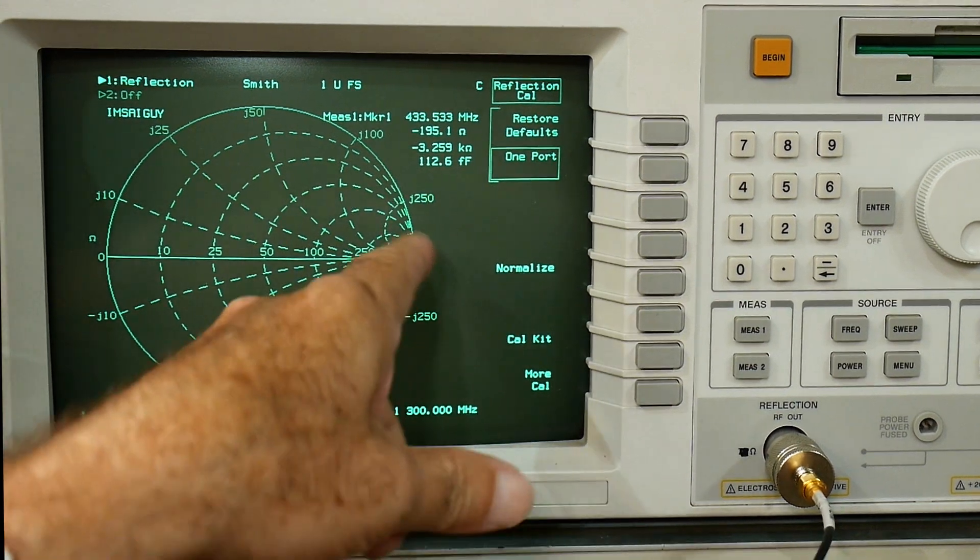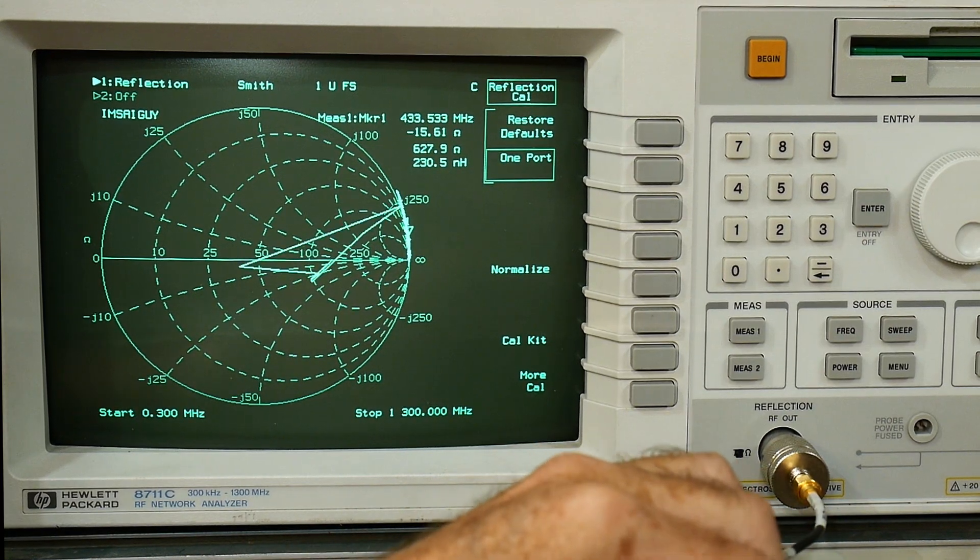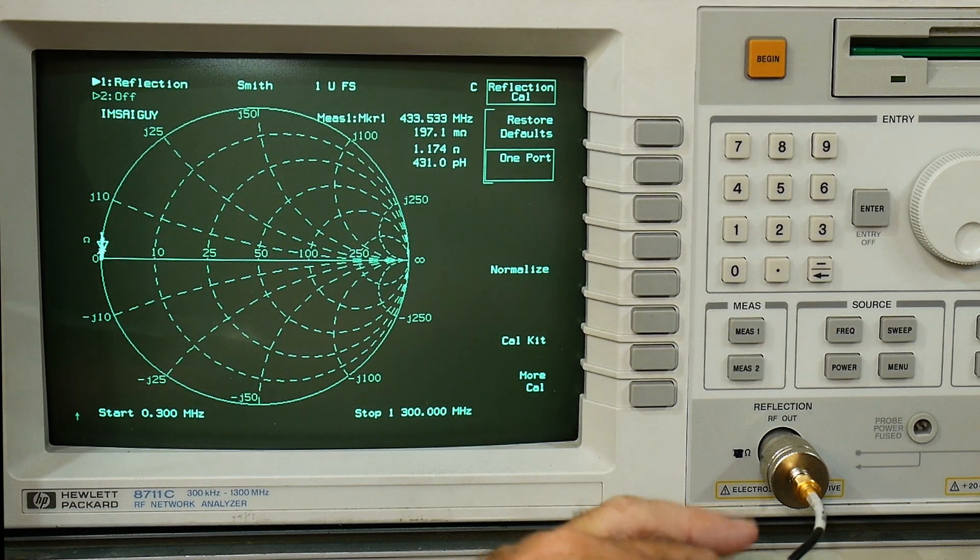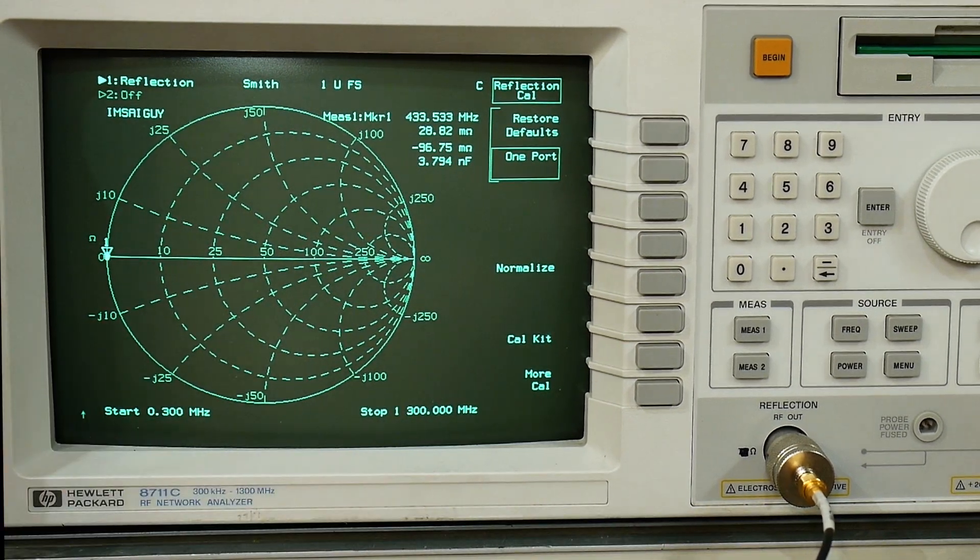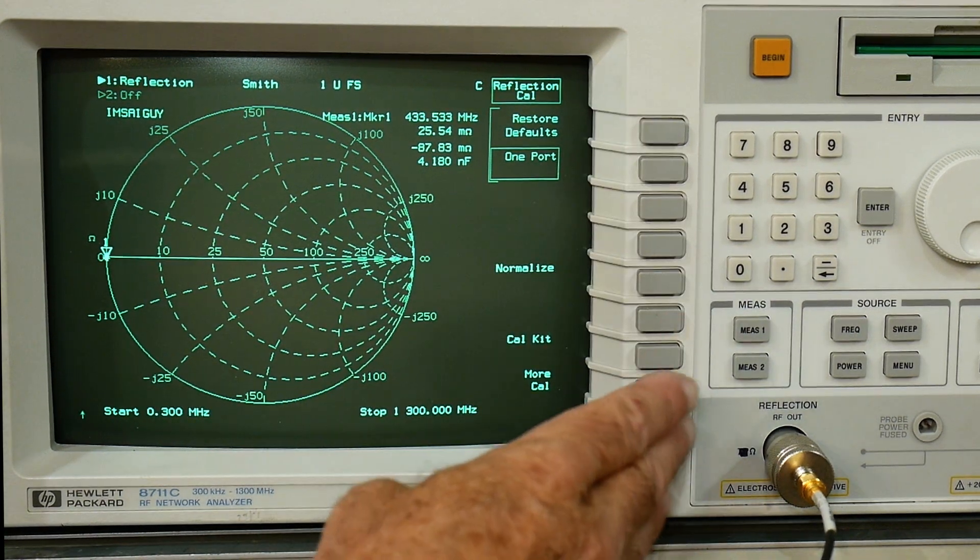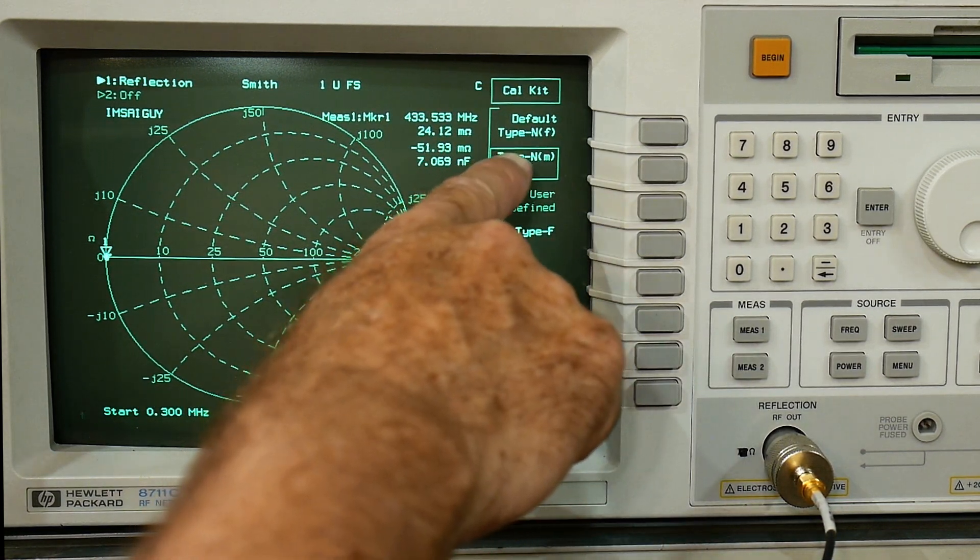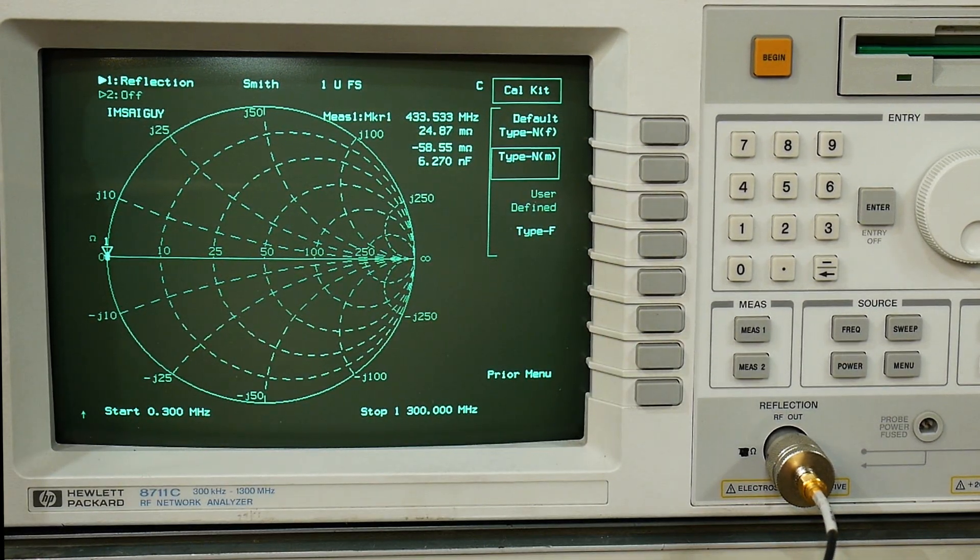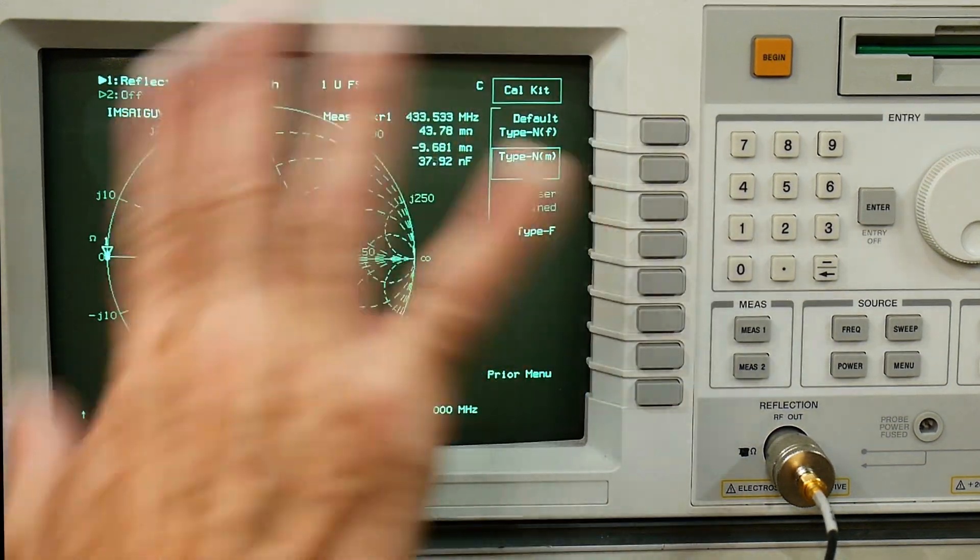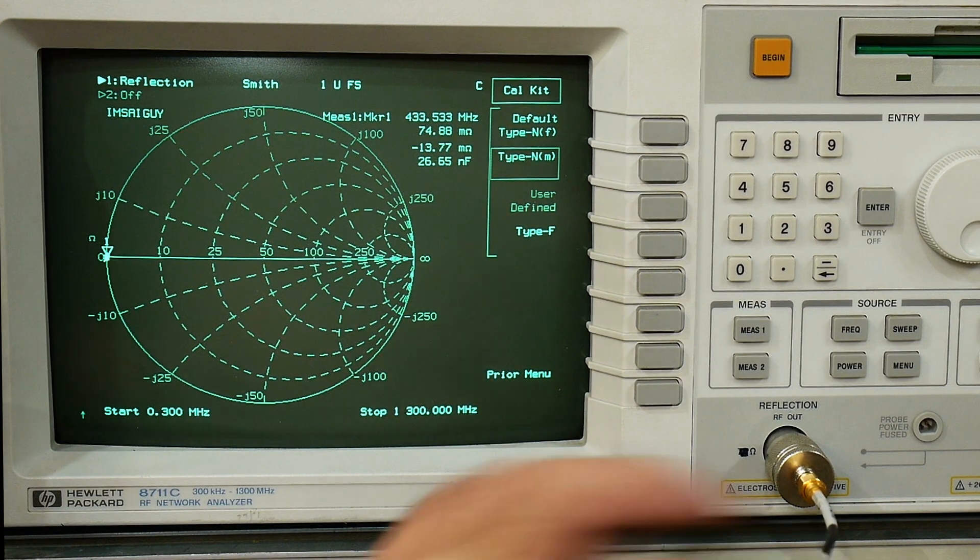So let's go back and look at that open again and you can see that now it's measuring very well. And if we measure the short, had we used the other one it would have given us an error. We'll go to the short and you can see that we're measuring very well so now we're perfectly calibrated. So that's the trick if you get one of these things, make sure that you go into the cal kit and choose type N. I haven't tried type F yet but do type N and everything's fine. Do not use default.